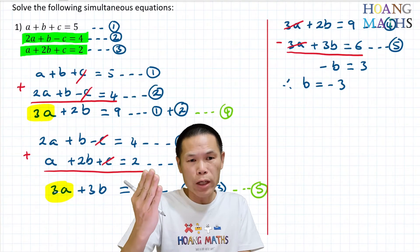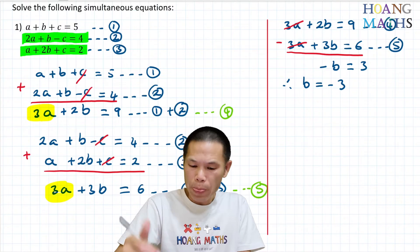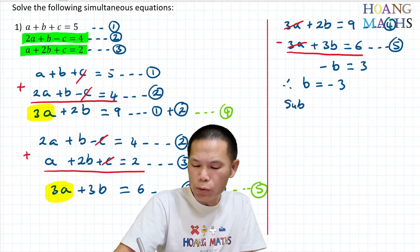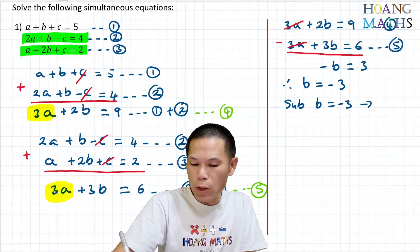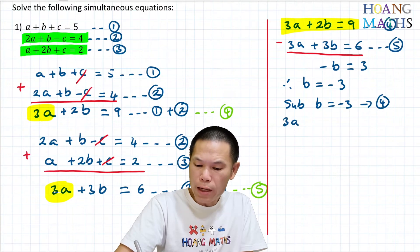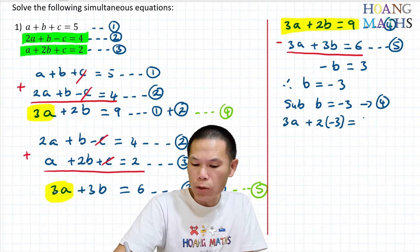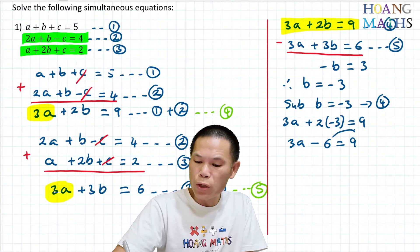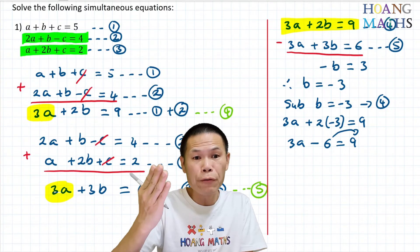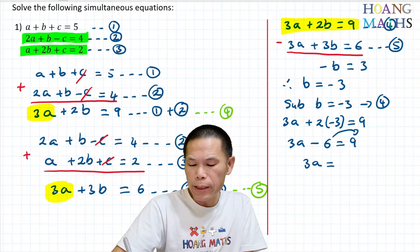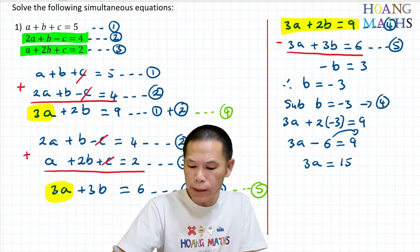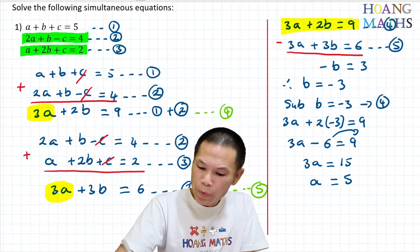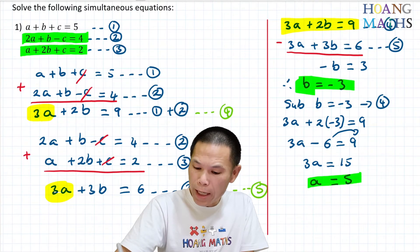Now substitute b equals negative three into equation four to solve for a. That gives 3a plus 2 times negative three equals nine, so 3a minus six equals nine. Moving the negative six across: 3a equals fifteen, so dividing both sides by three gives a equals five. So now we have b equals negative three and a equals five.